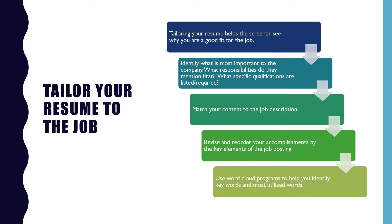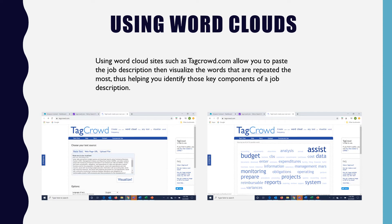Use word cloud programs to help you identify keywords and the most utilized words. Word cloud sites such as tagcrowd.com allow you to paste the job description and then visualize the words that are repeated most, helping you identify the key components of a job description. You can then use those prominent words to tailor your skills and knowledge to demonstrate your experience with the needed skills.